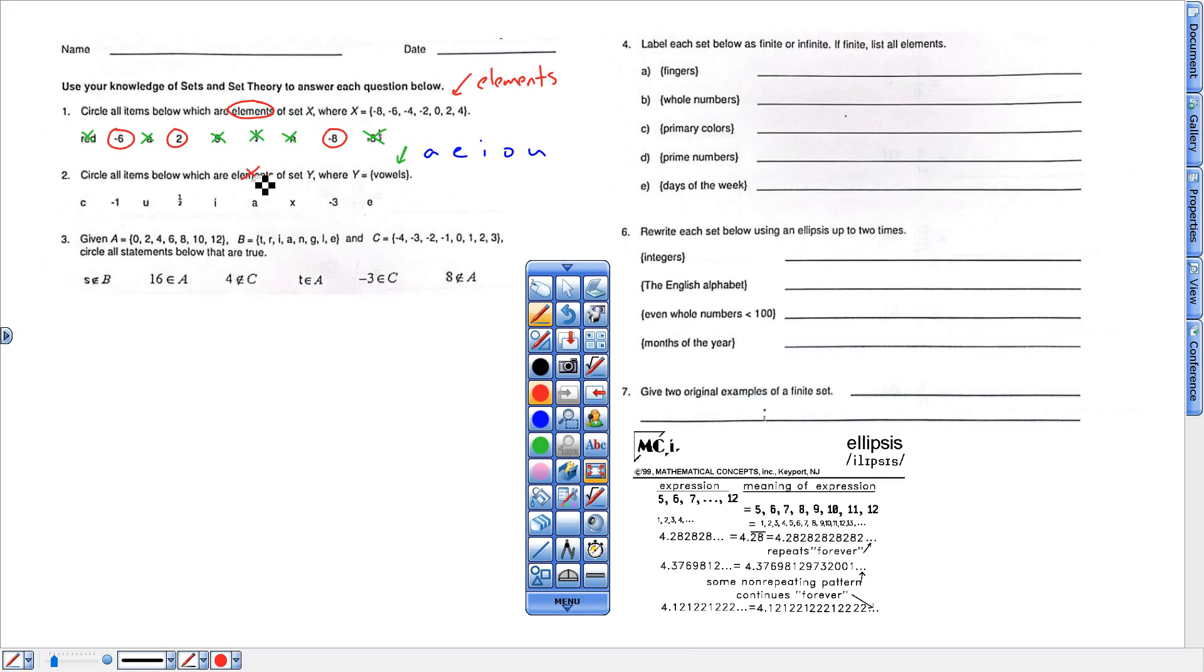So C, nope. Negative 1, nope. U, yes. I, yes. A, yes. And I think this is an O right here. None of those other ones are vowels. So they are not an element of that set.